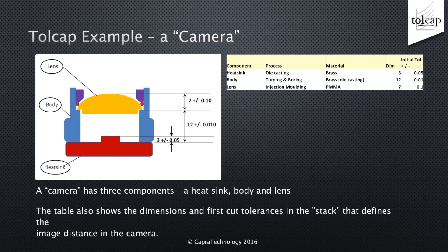The heatsink dimension — 3mm plus or minus 0.05 — is the height of a raised platform for a photodiode array that's connected to a surrounding printed circuit board. The body, which is 12mm long plus or minus 0.01, just spaces the lens from the photodiode array. The lens is injection-moulded PMMA. The front part of the lens from the mounting shoulder is 7mm plus or minus 0.1.